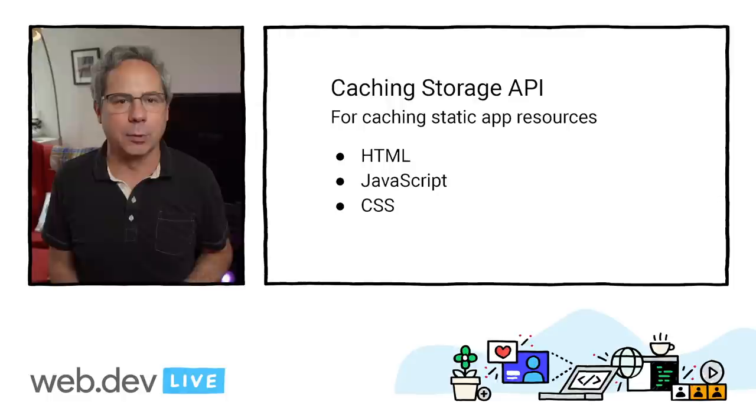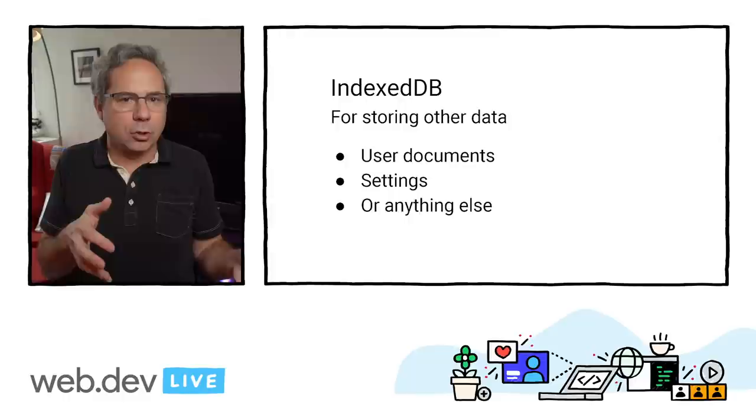And with IndexedDB, you can store all kinds of data — article content, user's documents, settings, and more. IndexedDB and the Cache Storage API are supported in every modern browser. They're both asynchronous and will not block the main thread. They're accessible from the window object, web workers, and service workers, making it easy to use them anywhere in your code. There are several other storage mechanisms available in the browser, but they've got limited use and may cause significant performance issues.